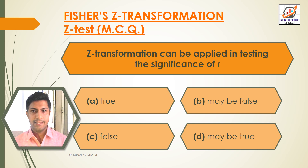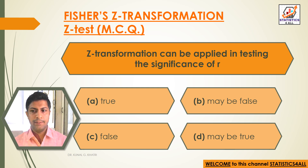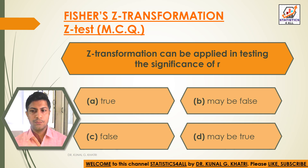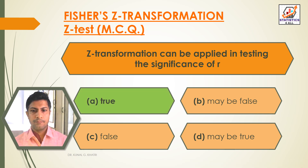Next question. Z-Transformation can be applied in testing the significance of R. Option A: True. Option B: May be true. Option C: False. Option D: May be true. Here we have the answer: Option A, True.